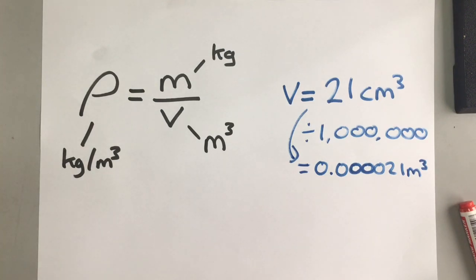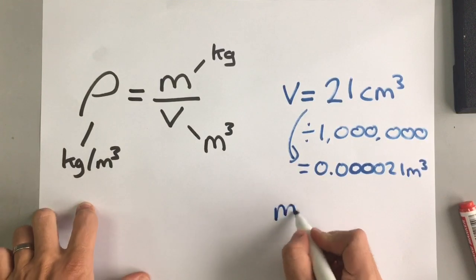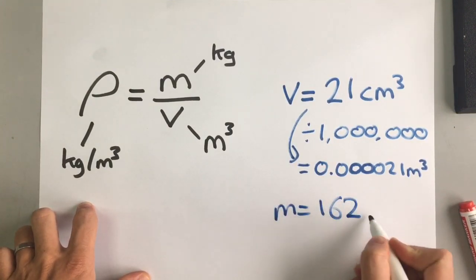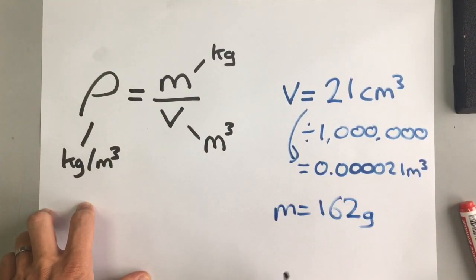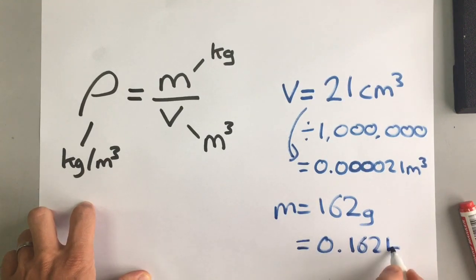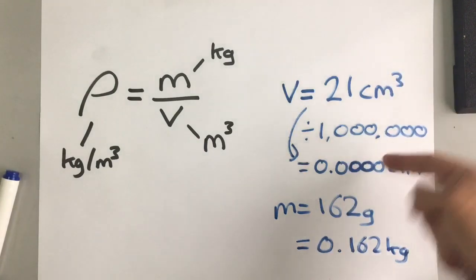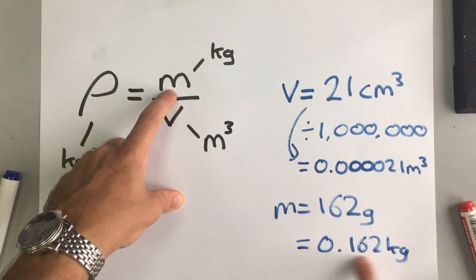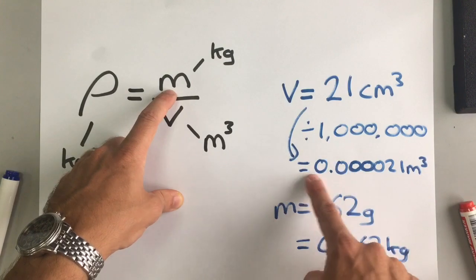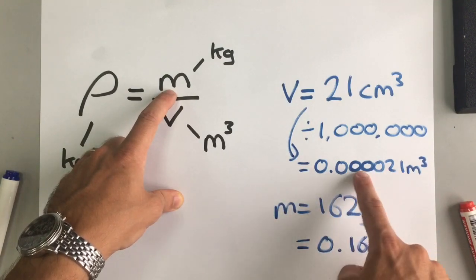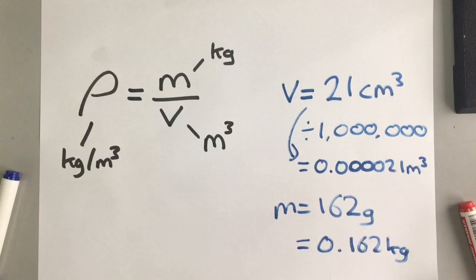So that is my volume in meters cubed of my iron bar. And I found out the mass earlier, which was 162 grams. And remember, we want that in kilograms. So that's 0.162 kilograms. So now we can work out the density, which is the mass divided by the volume. So 0.162 divided by 0.000021. And that will give us the density of our iron bar.